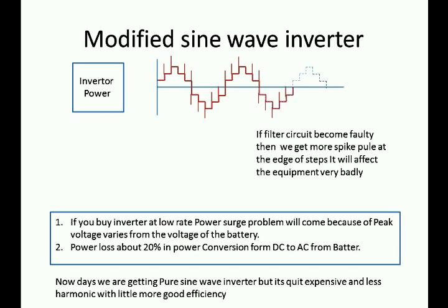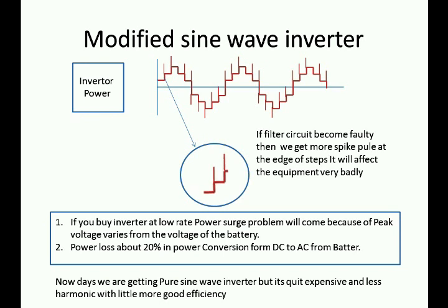Since harmonics and spikes are present in the waveform, they will affect the motor coil. If the filter circuit in the inverter becomes faulty, you will get more spike pulses at the edge of the step, which will affect equipment very badly. Also, if you buy a low-cost inverter, power regulation problems may occur because peak voltage varies from the battery voltage, and about 20% of power is wasted in the DC to AC conversion. If you notice symptoms, change the inverter quickly.